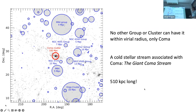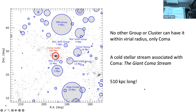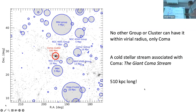Another thing we checked is whether this feature could be connected to a galaxy group or cluster — whether it can sit inside the virial radius of another group. We looked at all the groups and clusters in this area. The Coma cluster is here in the middle in red, and a little red bar indicates where our feature is. It turns out the only virial radius it can be within is Coma. All other groups, including Virgo and the NGC 94 group, their virial radii don't even get close to our feature. So our feature can really only be associated with Coma, and hence the name: the giant Coma stream.